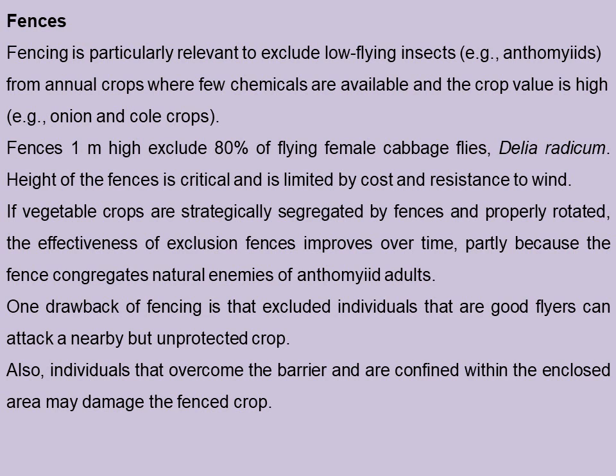Height of the fences is critical and is limited by cost and resistance to wind. If vegetable crops are strategically segregated by fences and properly rotated, the effectiveness of exclusion fences improves over time, partly because the fence congregates natural enemies of adult pests. One drawback of fencing is that excluded individuals that are good flyers can attack a nearby but unprotected crop. Also, individuals that overcome the barrier and are confined within the enclosed area may damage the fenced crop.